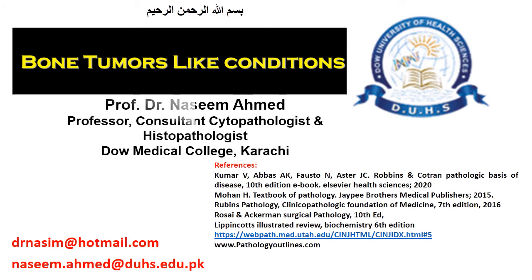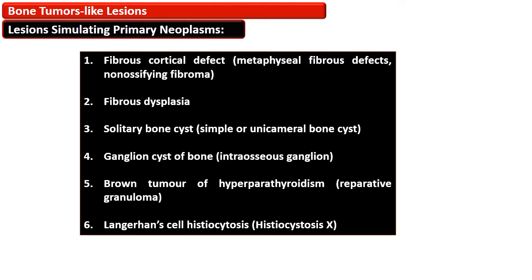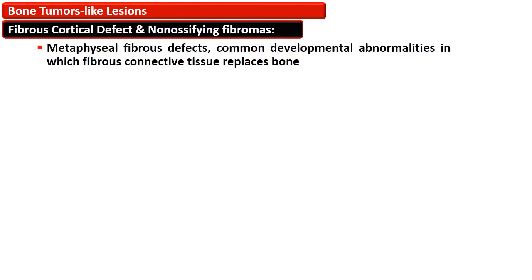This video is about the tumor-like conditions of the bone. There are many non-neoplastic conditions that simulate bone tumors and they are gathered under the umbrella heading of tumor-like conditions of the bone. These include fibrous cortical defect, non-ossifying fibroma, fibrous dysplasia, solitary bone cyst, unicameral bone cyst, ganglion cyst of the bone, brown tumor of hyperparathyroidism, and Langerhans cell histiocytosis.